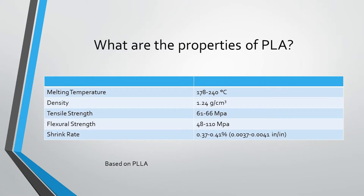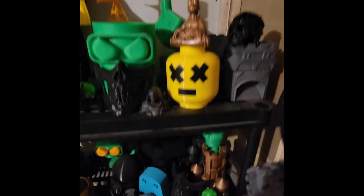Now let's talk about the properties of PLA. The melting temperature is between 178 and 240 degrees Celsius. It has a relative density of 1.24 grams per cubic centimeter, a tensile strength of 61 to 66 megapascals, a flexural strength of 48 to 110 megapascals, and a generalized shrink rate of 0.37 to 0.41%.